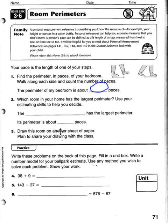Number three: on the back side, they need to draw this room on the other side of the sheet. Plan to share your drawing with the class. Make sure they read the entire home link before they draw the whole living room on the back side of their page.